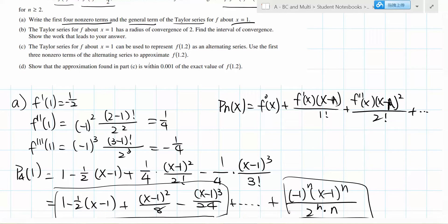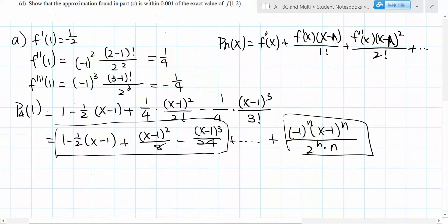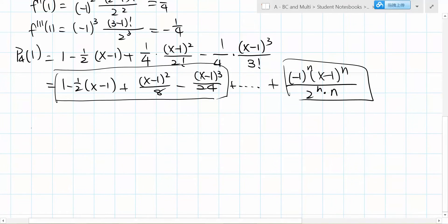Part b: the Taylor series for f about x equals 1 has a radius of convergence of 2. Find the interval of convergence and show your work.